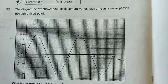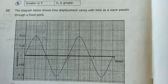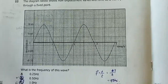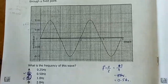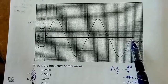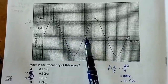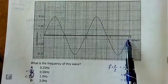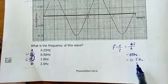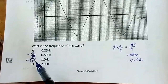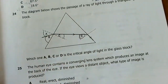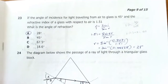Question 22: A displacement-time graph shows a wave passing through a fixed point. Frequency = number of cycles/time. I count two cycles in four seconds, so frequency = 2/4 = 0.5 Hz. Answer is B.